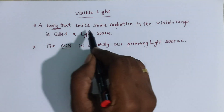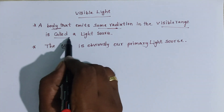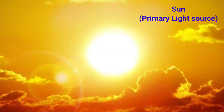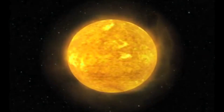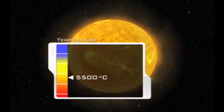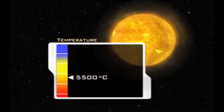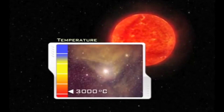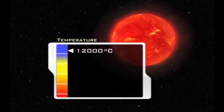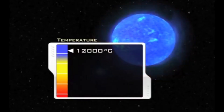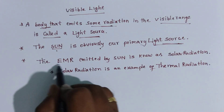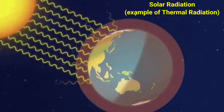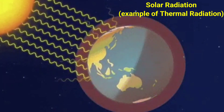A body that emits some radiation in the visible range is called a light source. The sun is our primary light source and produces more yellow light than any other color because of its surface temperature. If the sun's surface were cooler — say 3,000 degrees Celsius — it would look reddish, like the stars Antares and Betelgeuse. If the sun were hotter — say 12,000 degrees Celsius — it would look blue, like the star Rigel. The electromagnetic radiation emitted by the sun is known as solar radiation, which is an example of thermal radiation.